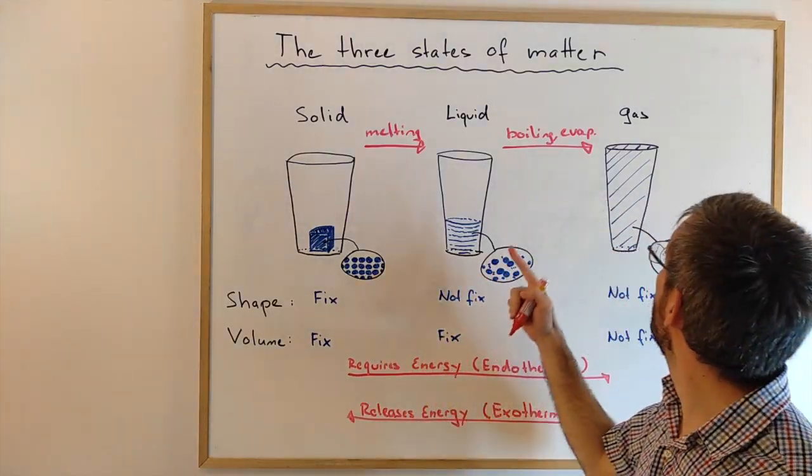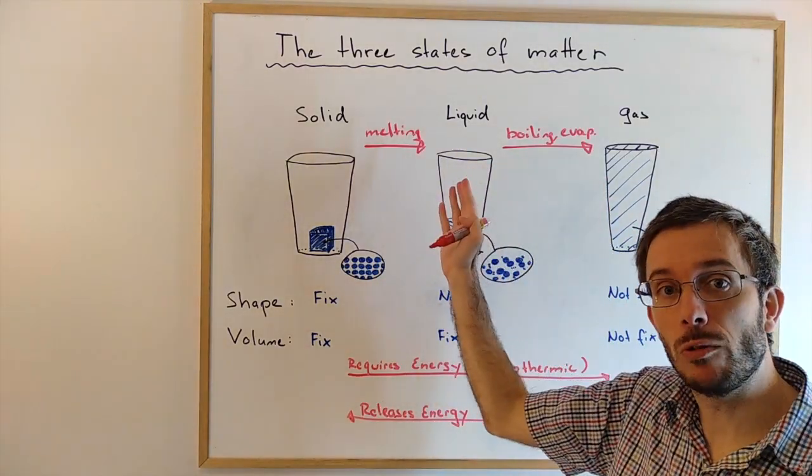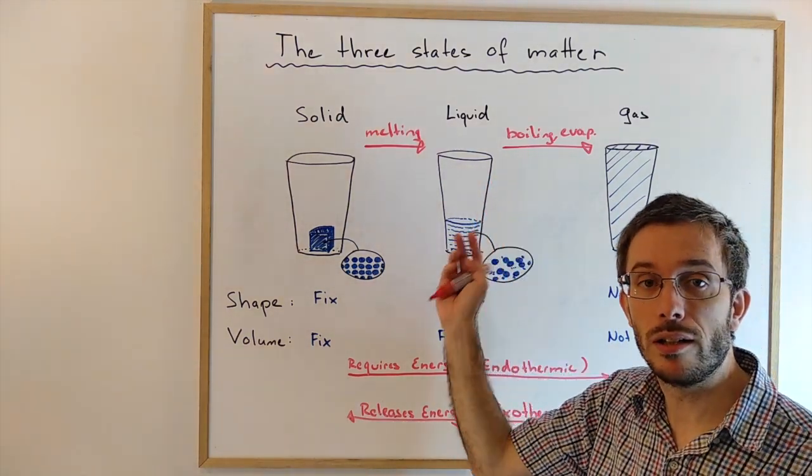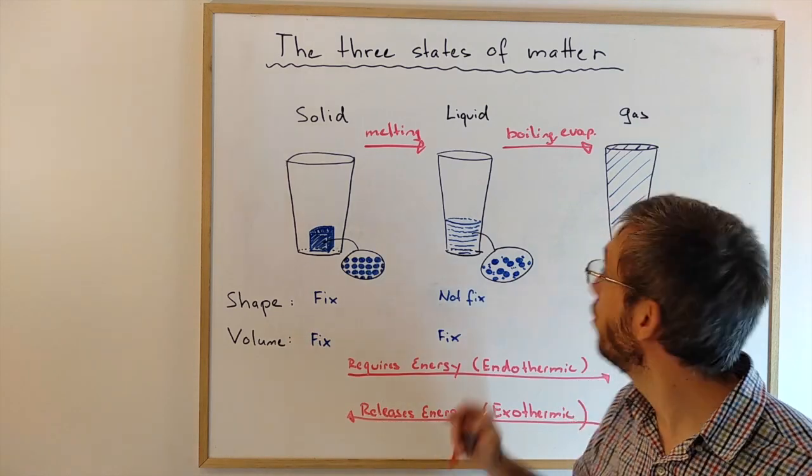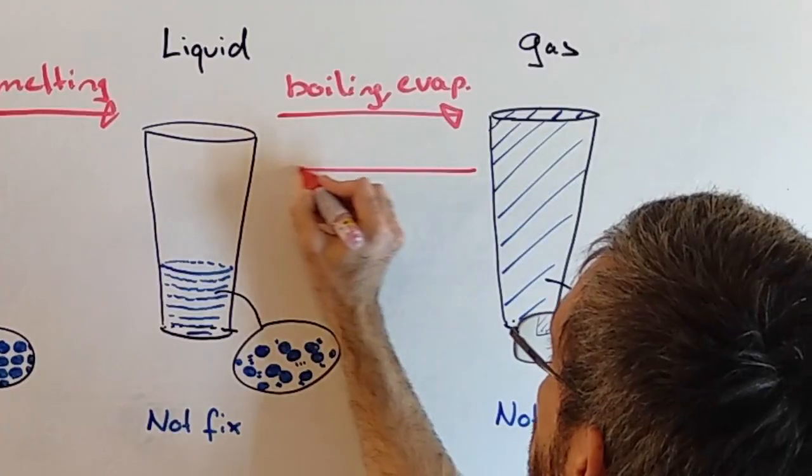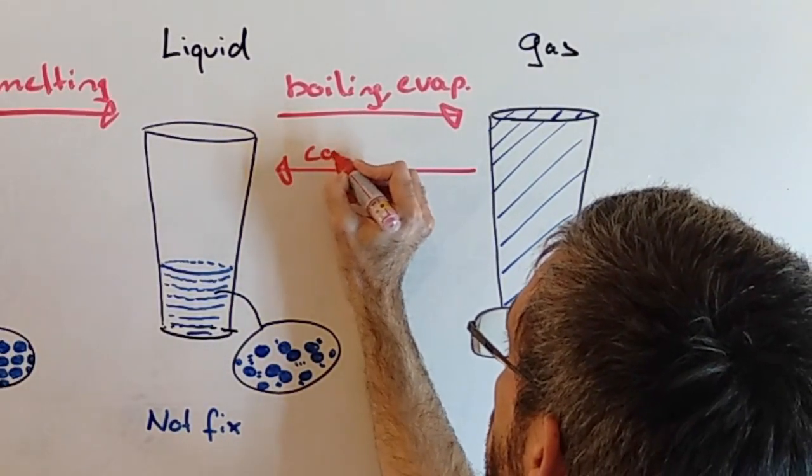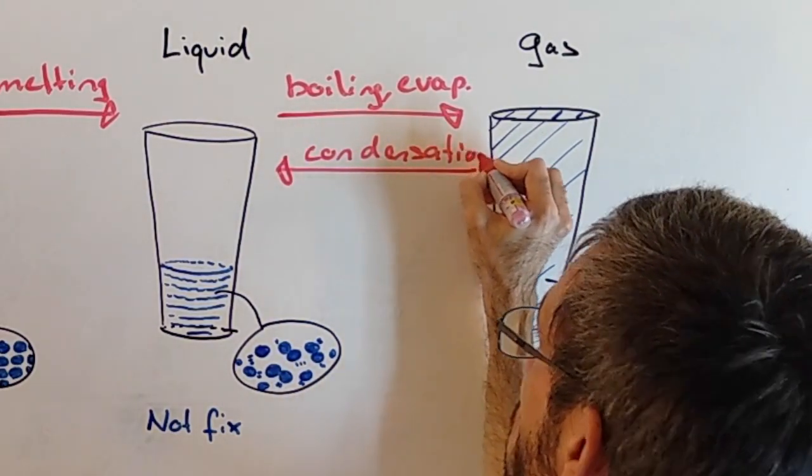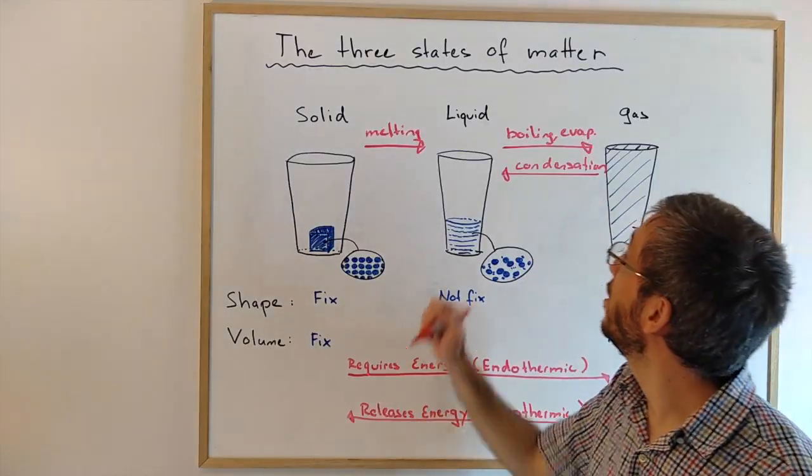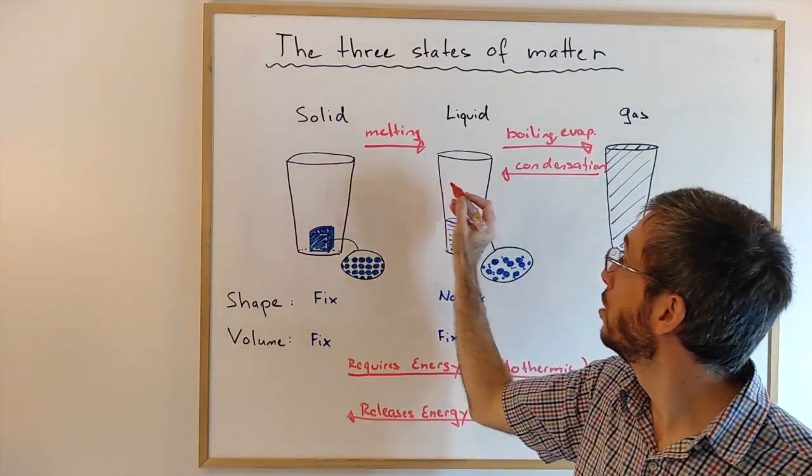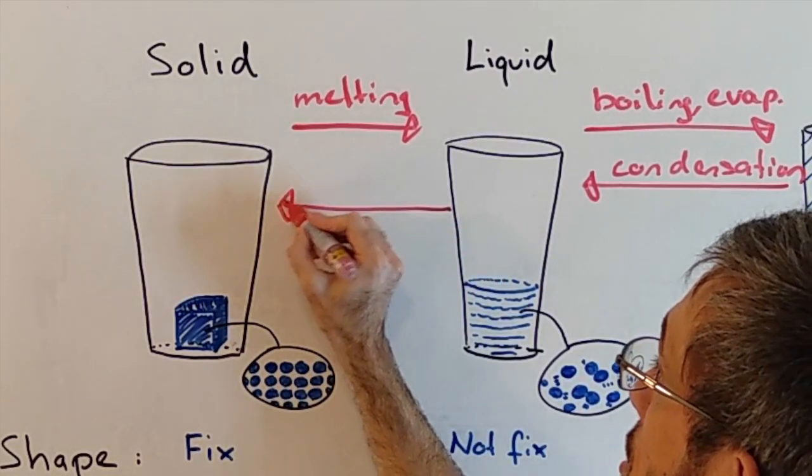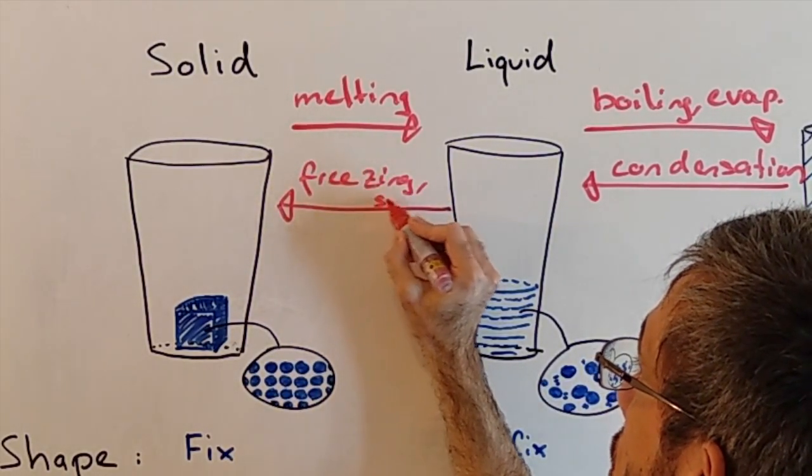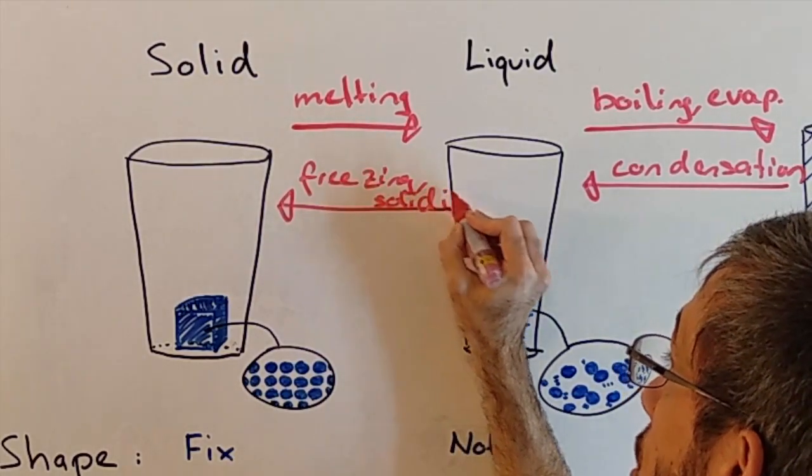The other way around, if a gas becomes liquid, for example in your shower, if you take a shower in the winter and then suddenly there's like a cover of water on your mirror, that's called condensation. And if the liquid becomes solid, this is freezing, or solidification.